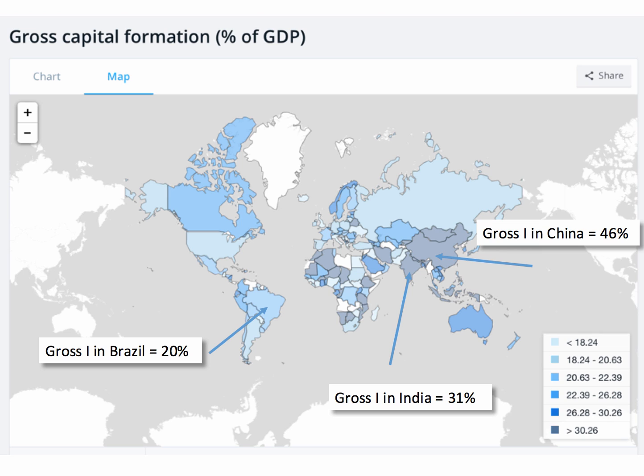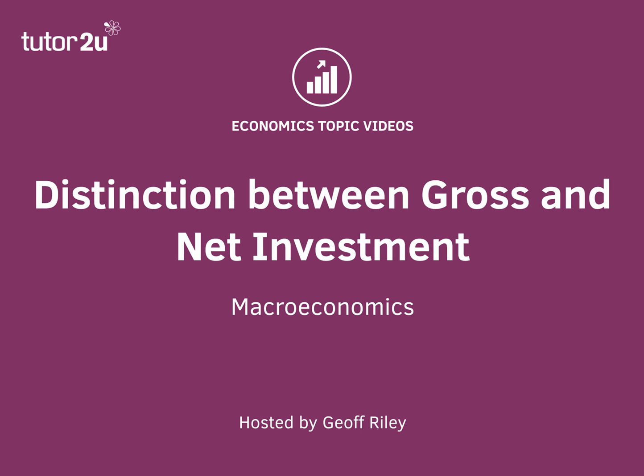Not quite as high in India, but still pretty high at 31% of GDP, and not as high in Brazil — Brazil had a level of gross investment of just 20% of GDP. That's the difference between gross and net investment.